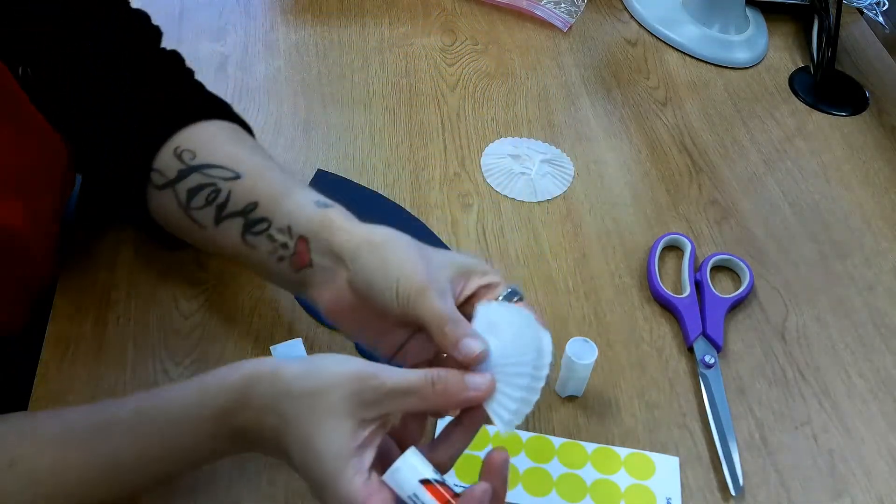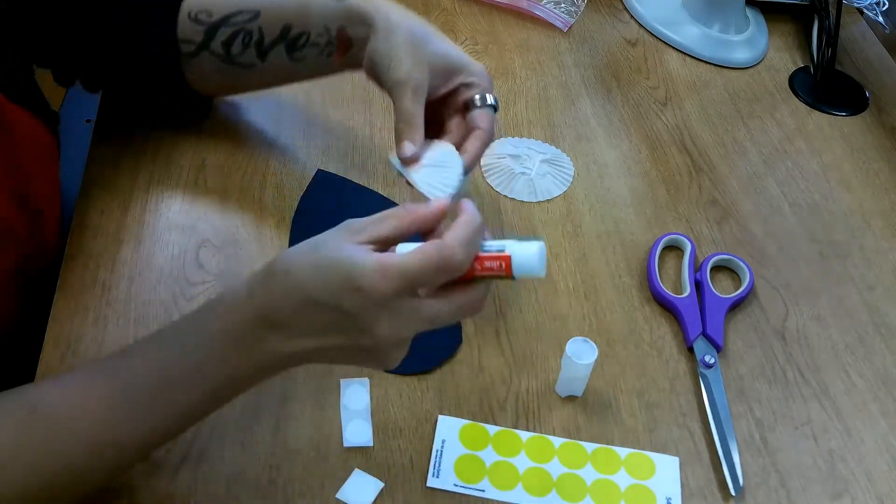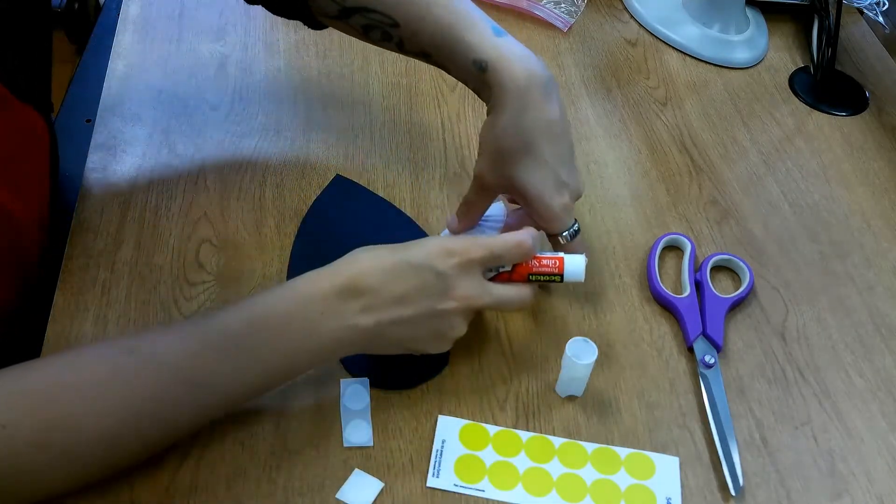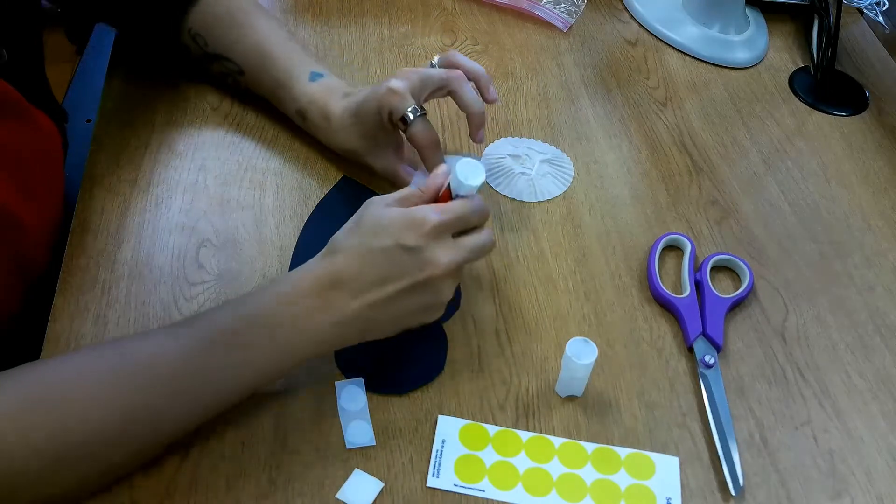And we can fold the cupcake liners in half, like so, to make adorable little bumblebee wings.